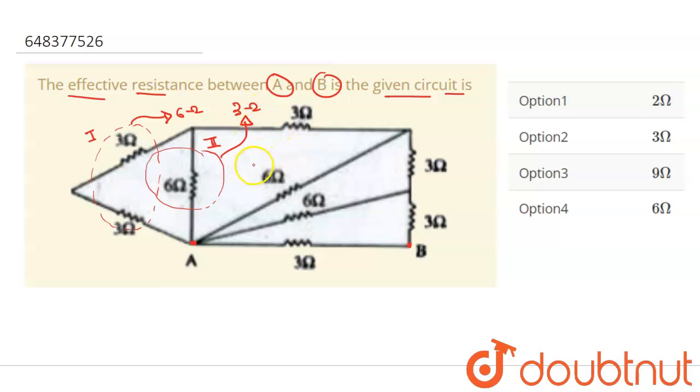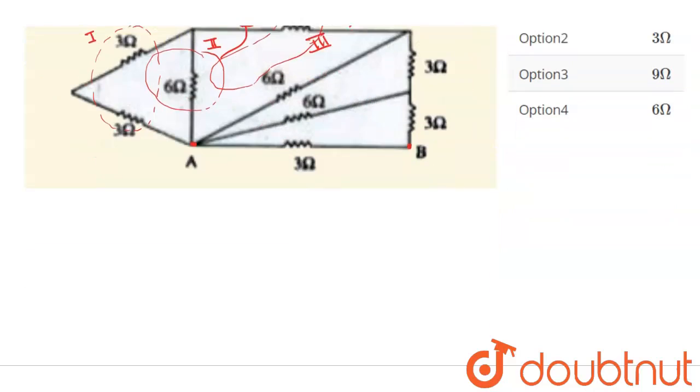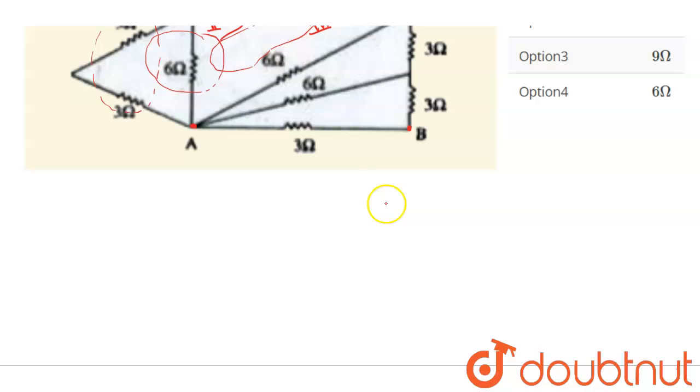Okay, and also now the third calculation that we are doing that this and this are in series. Okay, that is the third calculation that will give us six ohm. Now our resistance will look somewhat like this.